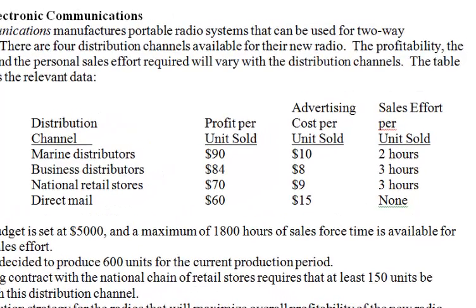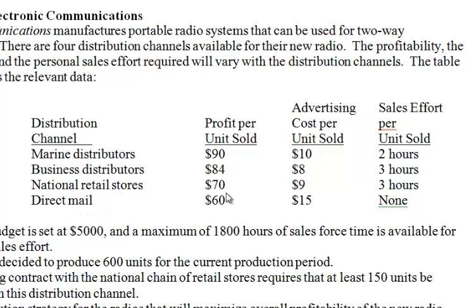The unit profits depend on the distribution channel. Selling through marine distributors is the most profitable at $90 per unit. Selling that radio through marine distributors requires, on average, $10 in advertising cost and two hours of sales force time. For the direct mail, it brings the least unit profit and the advertising cost is the highest.